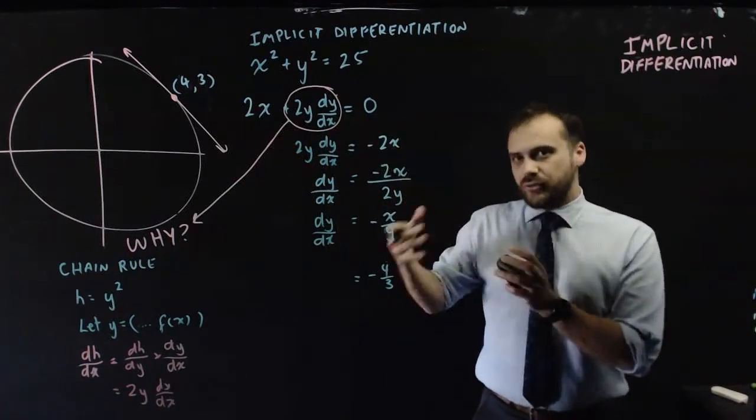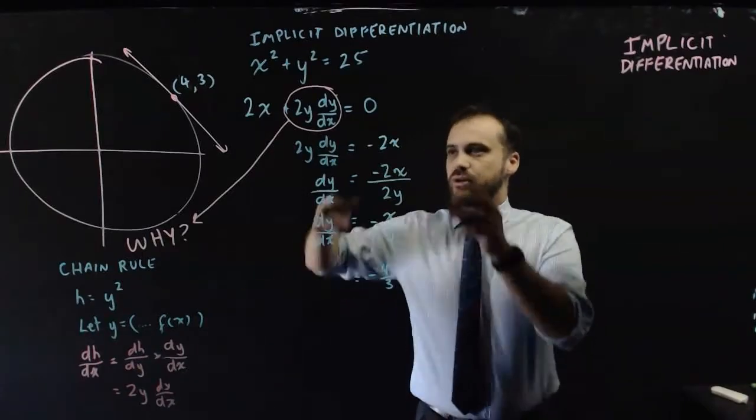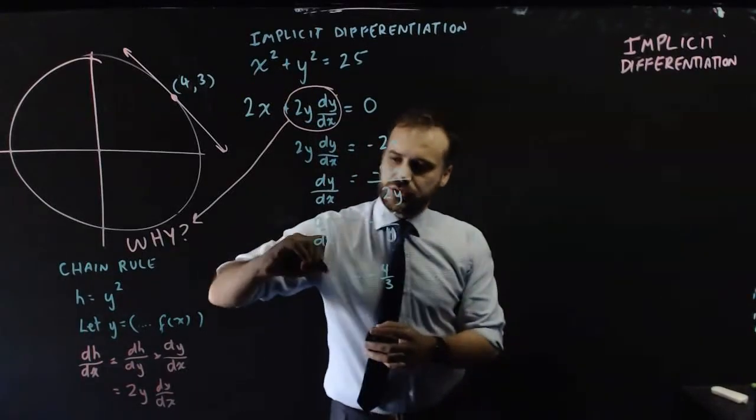And this 2y dy/dx is what I came up with here. And this is the powerful bit of implicit differentiation. This is where our dy/dx comes from.